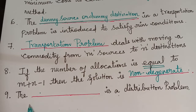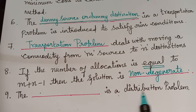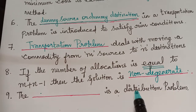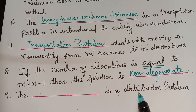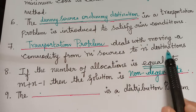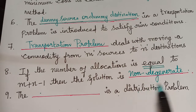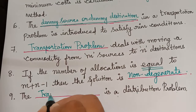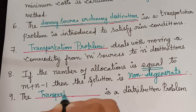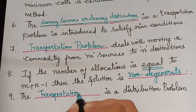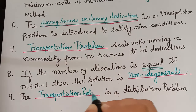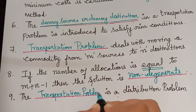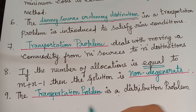The next question is: the dash problem is a distribution problem. A distribution problem involves distributing goods from m sources to n destinations, so the answer is transportation problem. These are different forms in which a question may be asked about transportation.